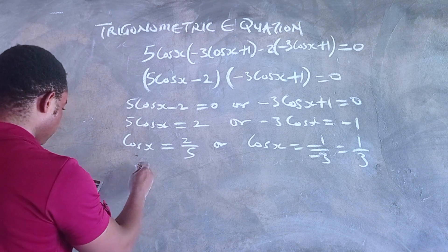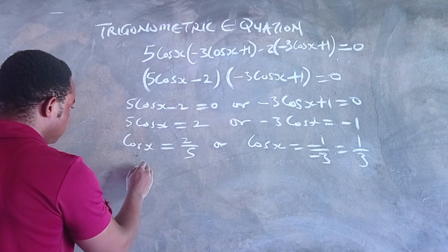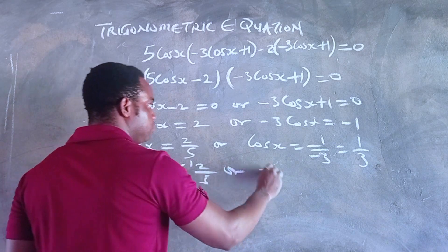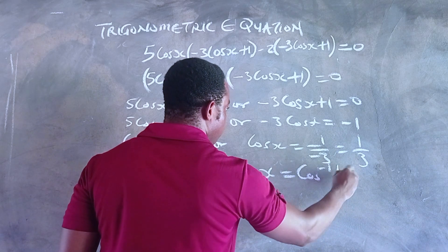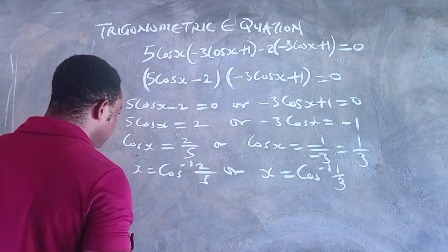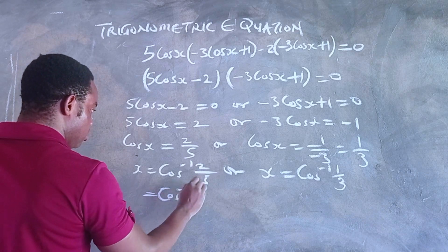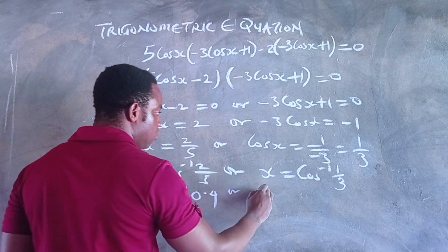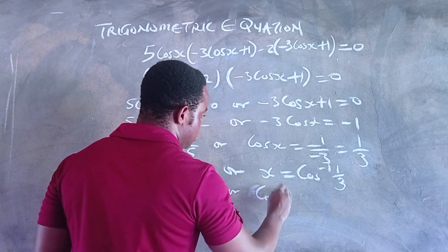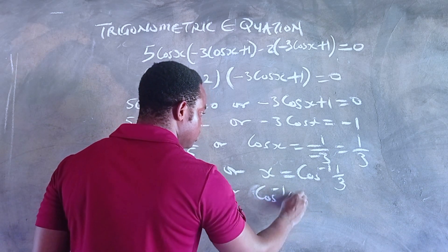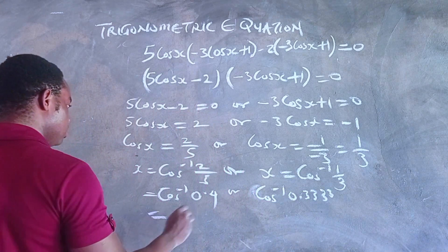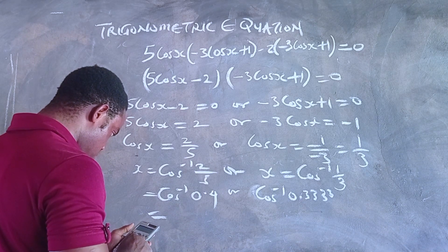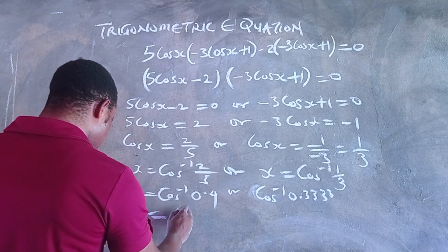We're going to need a calculator at this point. 2 divided by 5 is 0.4, so we have x = cos⁻¹(2/5) or x = cos⁻¹(1/3). That's x = cos⁻¹(0.4) or x = cos⁻¹(0.3333).